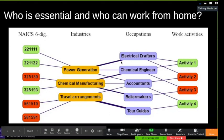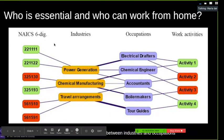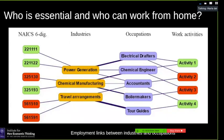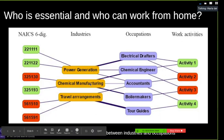We know which industries are essential or non-essential — several governments have given lists specifying which industries can open and which cannot. We also have data on occupations and work activities through O*NET. We develop a Remote Labor Index: we rate work activities as 'can be done from home' or 'cannot,' then map this into occupations. This tells us which occupations can be done at home, and for non-essential industries, what part of the labor could still be done remotely.